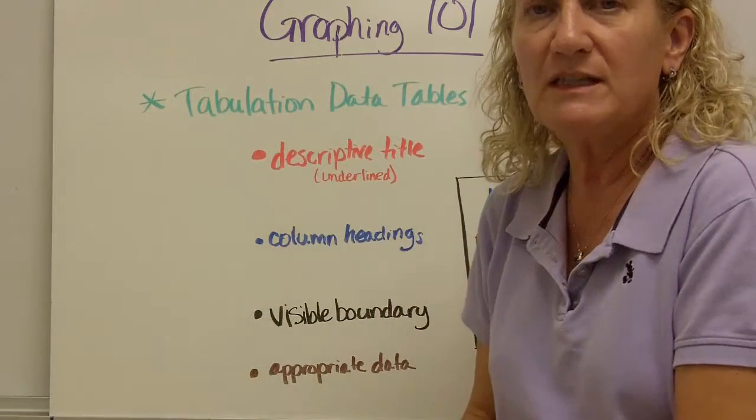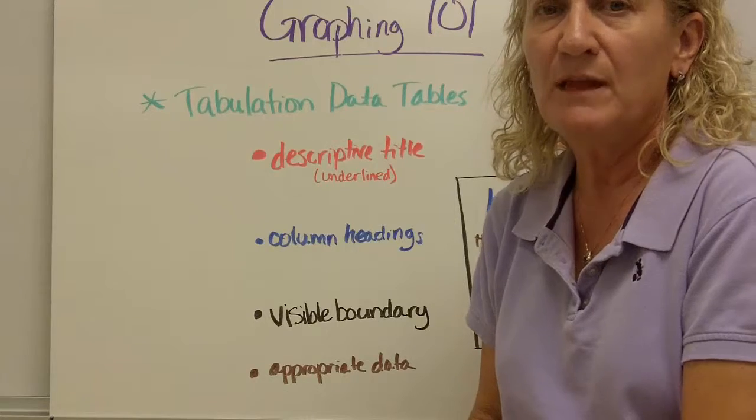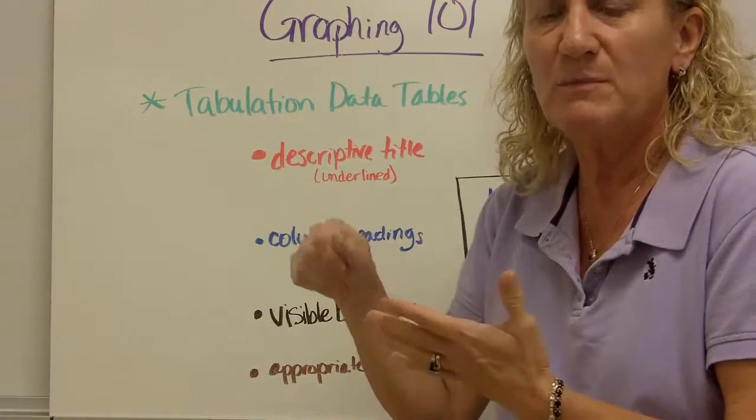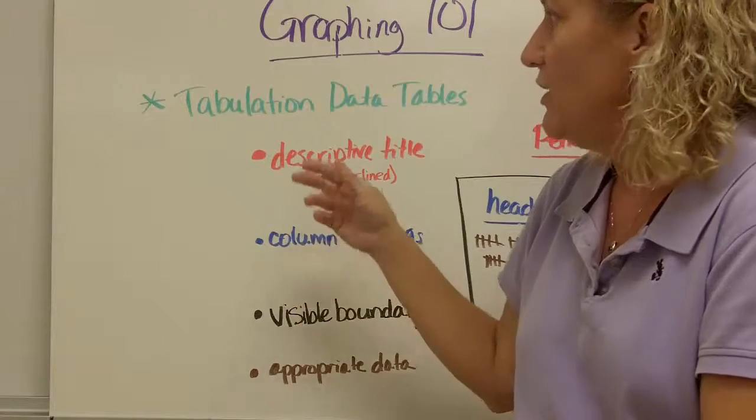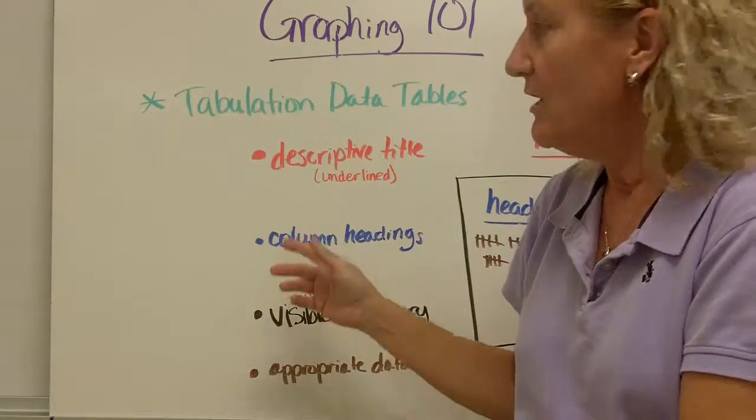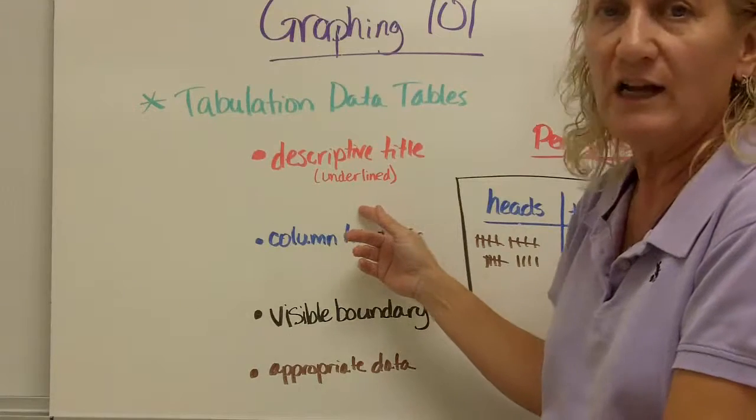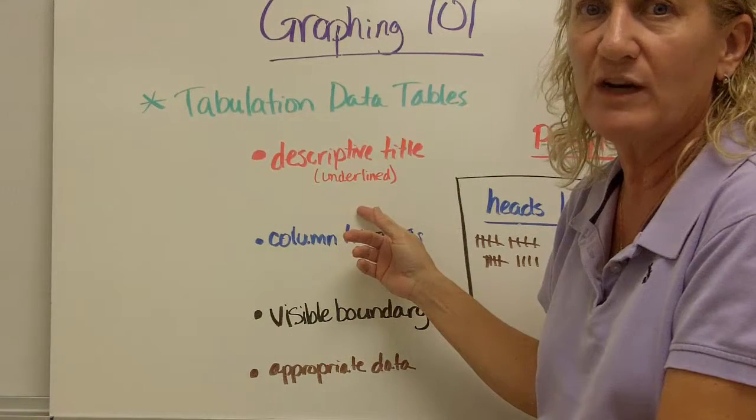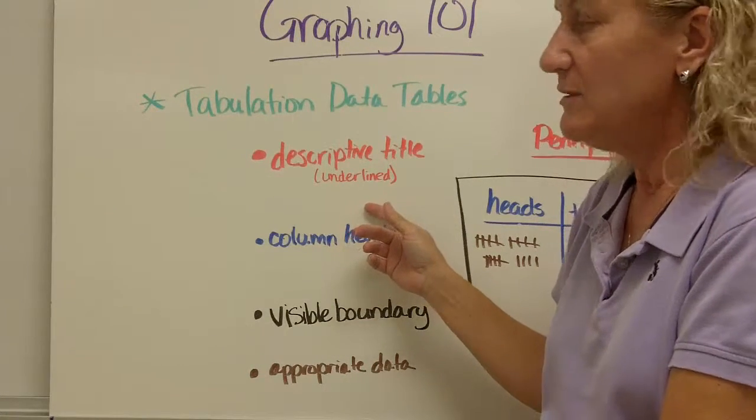First thing we're going to talk about is a tabulation data table. It's when you're doing a survey or getting general information and you're just making hash marks and keeping track. So there's four important parts for a tabulation data table. The first one is a descriptive title. The title has to be descriptive. It has to relate to what it is you're doing and it needs to be underlined.